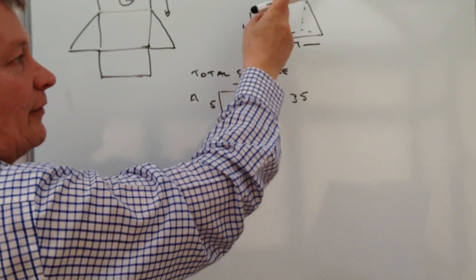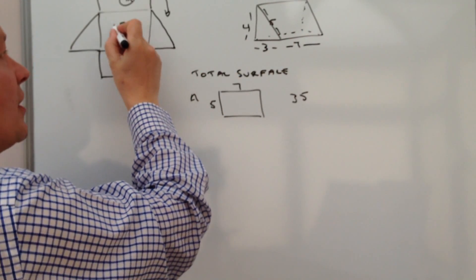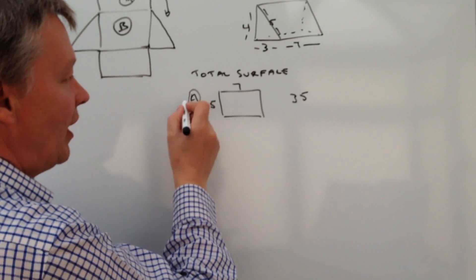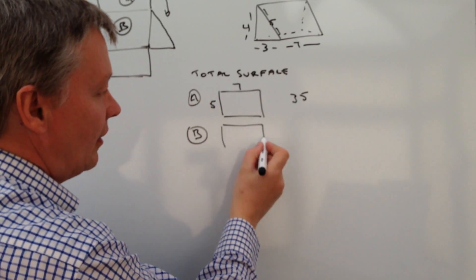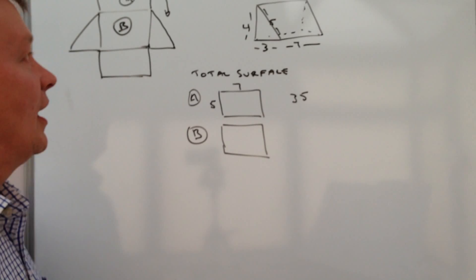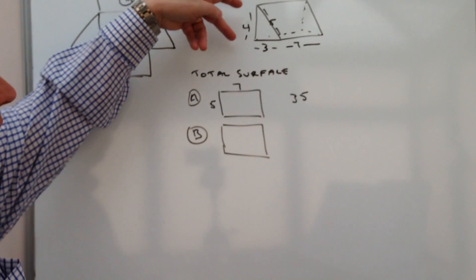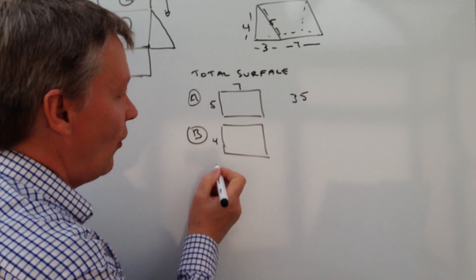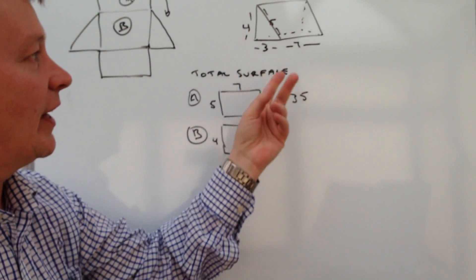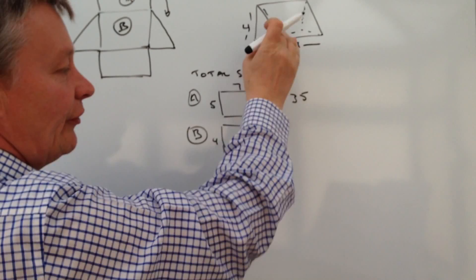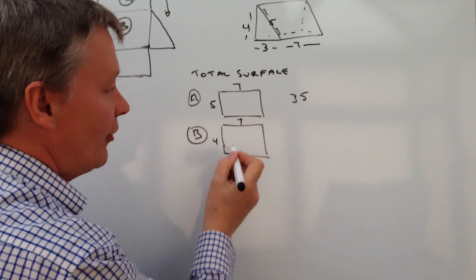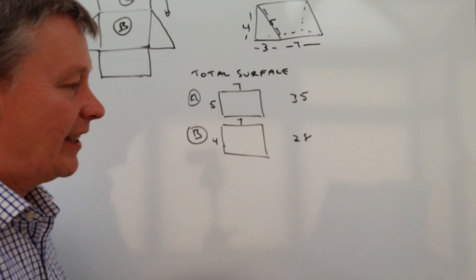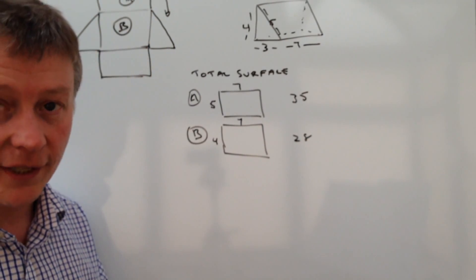So the next little bit is the back of this triangular bit, which is this B bit here. So B is going to be another rectangle. Well, we know from the drawing that the depth of it, the height of the triangular box is going to be four. And the width of it is exactly the same as the width of the front flap, which is seven also. So four times seven is 28. And again, that's centimeters squared.